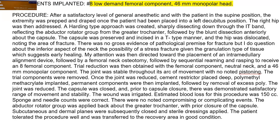After the patient was given anesthesia — that's the beginning of the report that you're always going to see — the patient was prepped and draped in a sterile fashion. The report then goes on to talk about how the right hip was addressed. A Hardinge-type approach was created, sharply dissecting through the IT band, reflecting the abductor-rotator group from the greater trochanter, followed by blunt dissection anteriorly about the capsule. The capsule was preserved and incised in a T-type manner, and the hip was dislocated, noting the area of the fracture. It is very important to note that this was an open procedure — no endoscope or arthroscope was utilized.